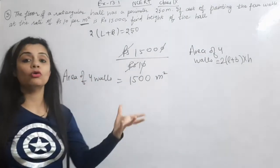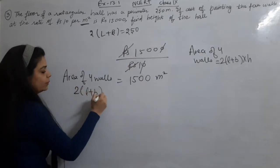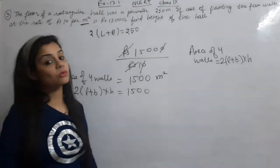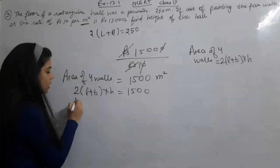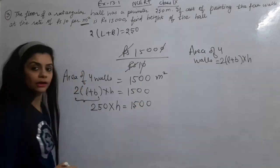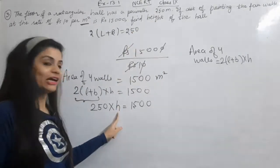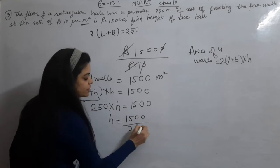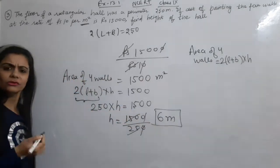Now the area of 4 walls is given by 2 into L plus B into H, which equals 1,500. We already know that 2 into L plus B is 250, so I substitute: 250 into H equals 1,500. Our work is done — we had to find height H. So H equals 1,500 upon 250, which comes out to be 6 meters. The question and calculation were very straightforward.